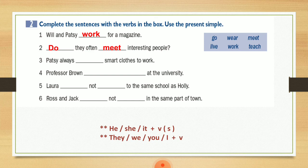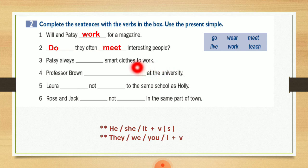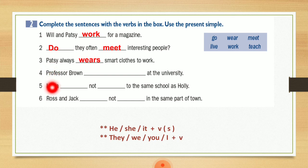Number three: Patsy always. برضو هون عندي keyword لالـ simple present اللي هي always — smart clothes to work. وهون في عندي clothes معناته الفعل المناسب رح يكون wear. ورح نستخدم wears مع الـ s لأنه الـ subject كان عندي Patsy بمعنى مفرد. Number four: Professor Brown برضو هون عندي subject مفرد فمعناته رح أختار الفعل وأضيف له s، فرح تكون: Professor Brown teaches at the university — اخترنا الفعل teach وضفنا له es.